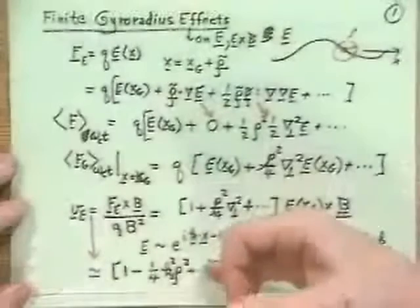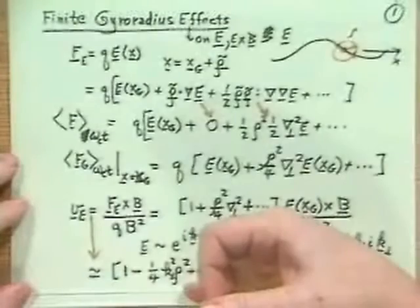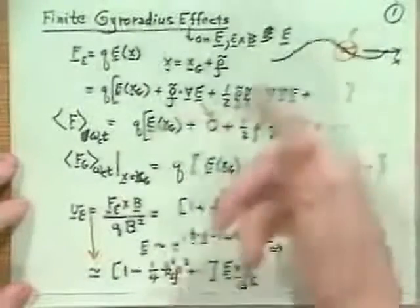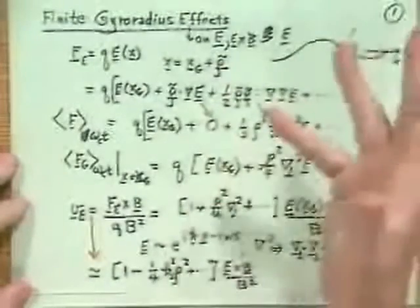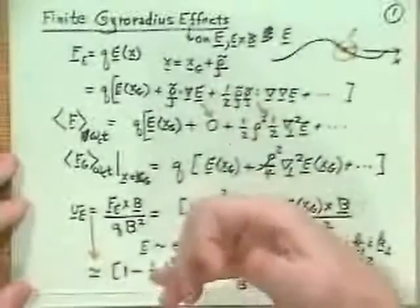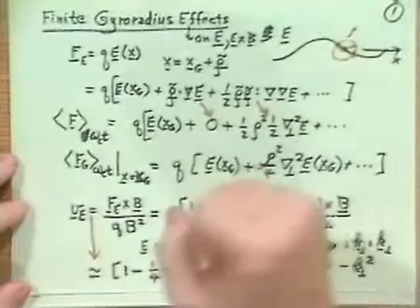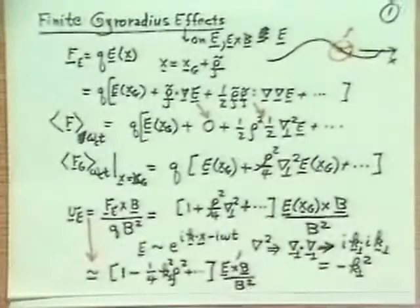Should we worry about finite Larmor radius effects on ions or electrons? Ions have larger gyroradii for the same temperature, so we're most concerned about ion finite Larmor radius effects. But sometimes we're concerned about electrons too.